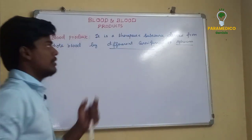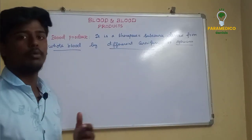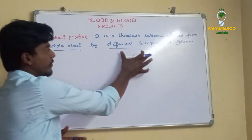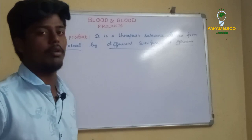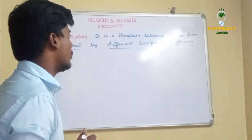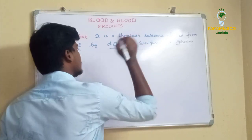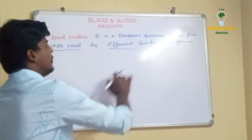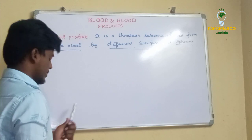There are two main methods to prepare blood products. The most common method is differential centrifugation. The other method uses apheresis to obtain blood components. The first method is associated with FRSS.